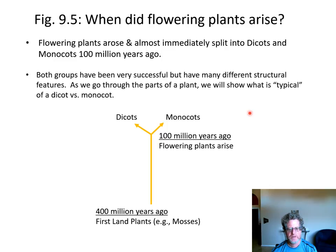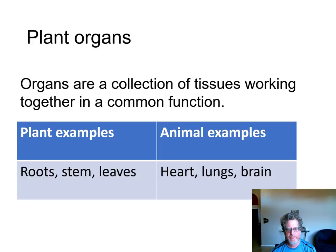As we go through this lecture we'll talk about monocots versus dicots. Flowering plants arose about 100 million years ago and almost immediately separated into two groups — the dicots and the monocots. Because they've been separated for so long, their structures are very different, and they're both very successful groups of flowering plants.